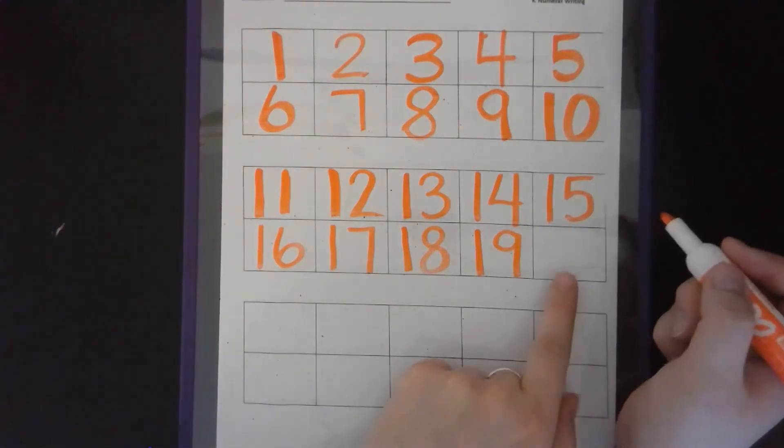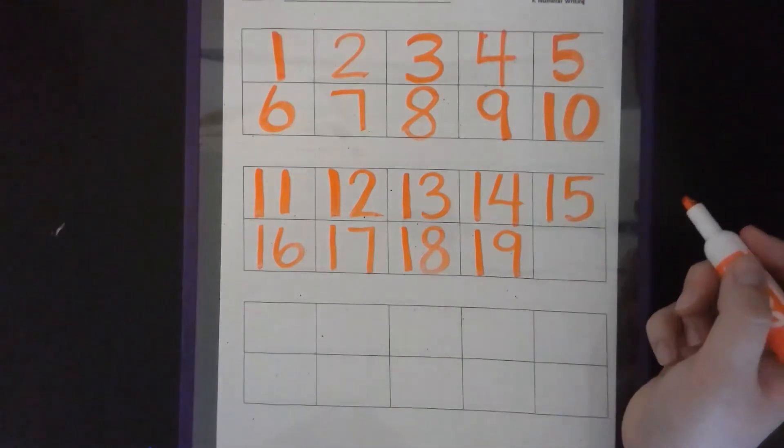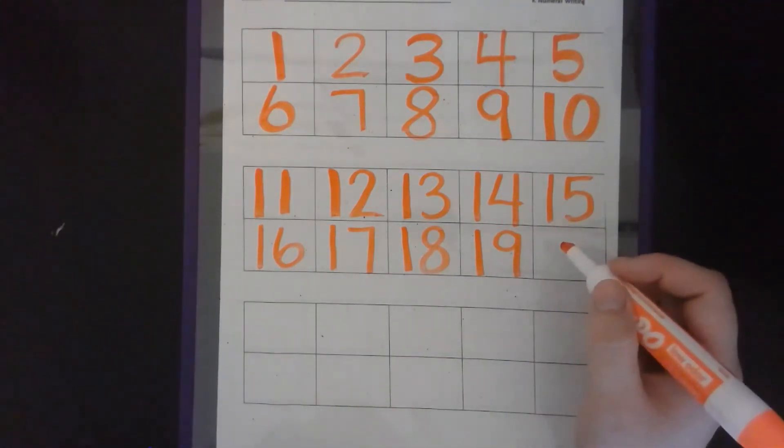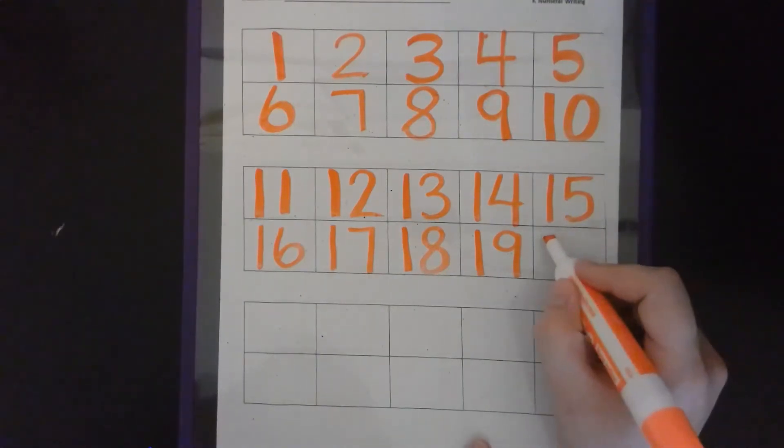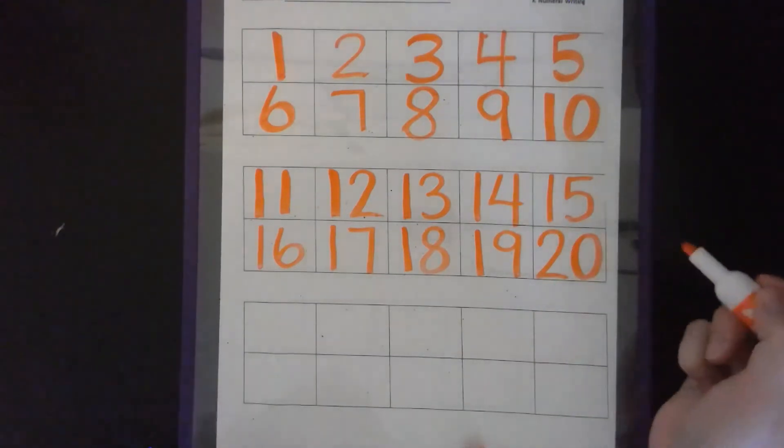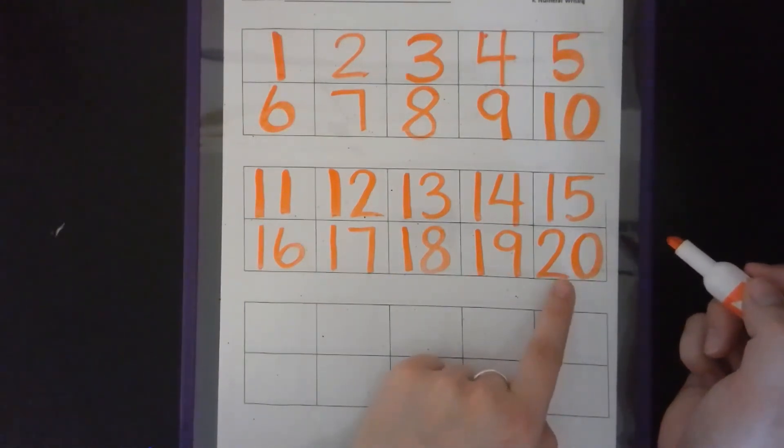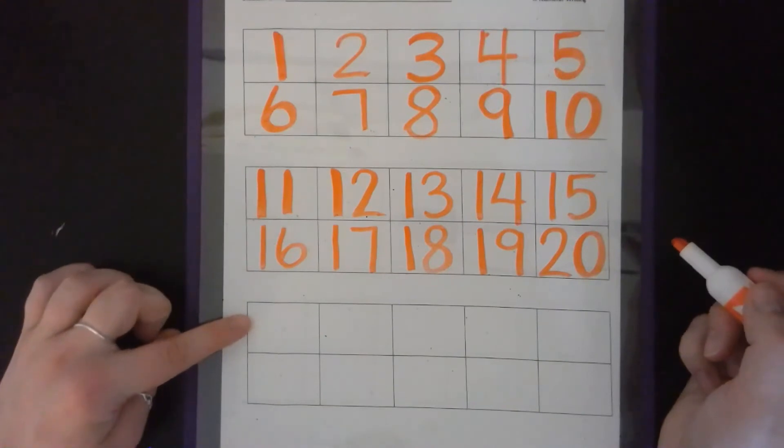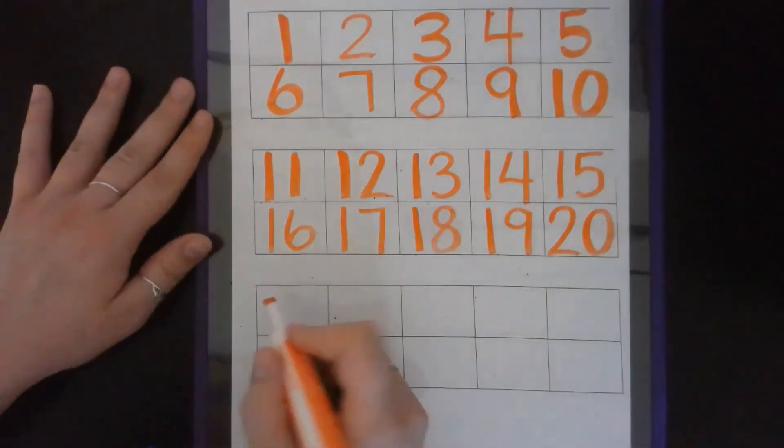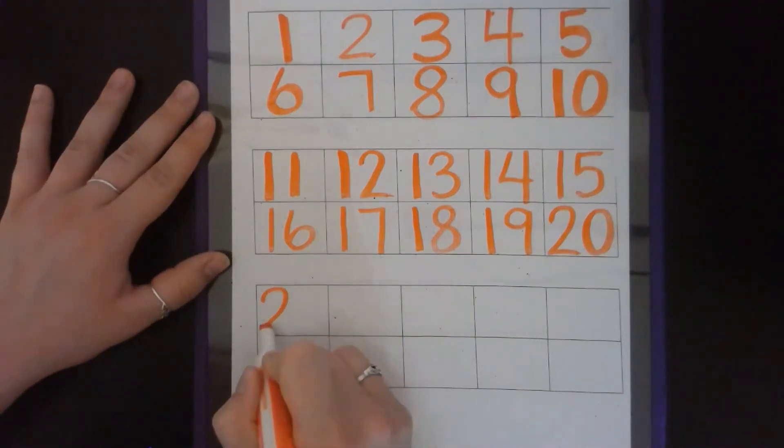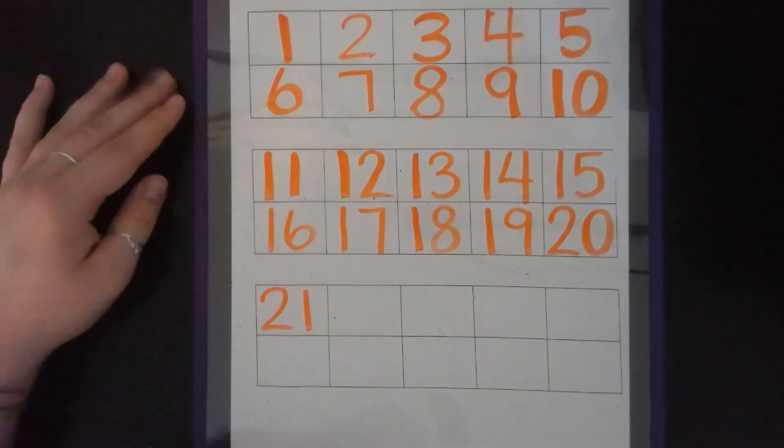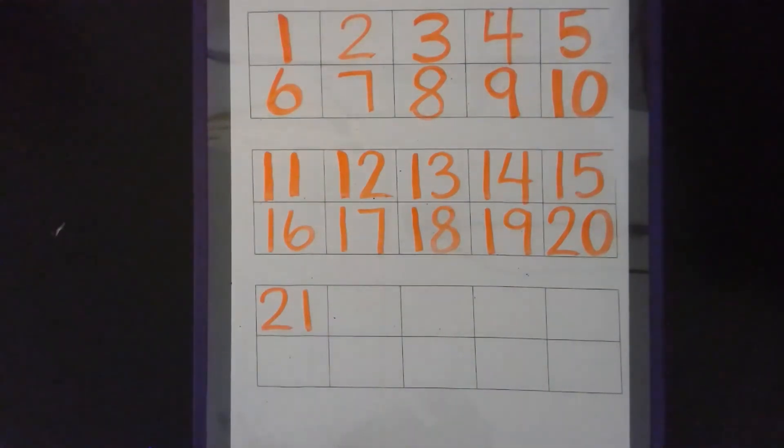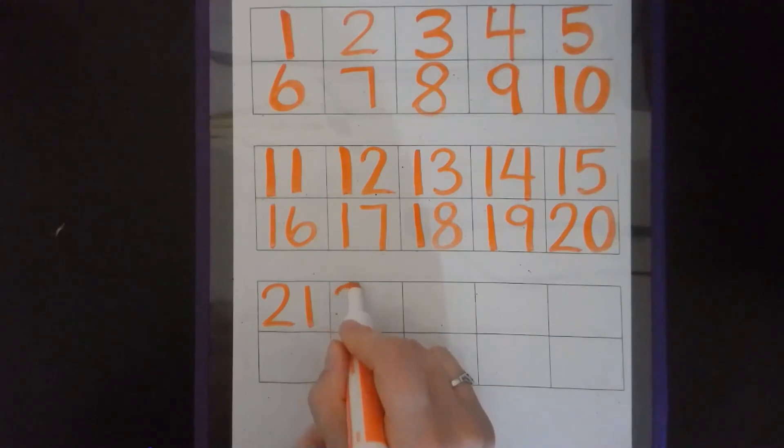So, what's the next number that comes after 19? 20. And when we say 20, we're going to start our family of 20s. And all of our family, all of the numbers in our family of 20s start with a two. So, we have a two and a zero. That makes 20. So, our next number is 21. When we make 21, we go a two and a one. Anytime you hear that word 20, that means we start a number with a two. So, we have a two and a one. And for 22, we have a two and then a two. 22.